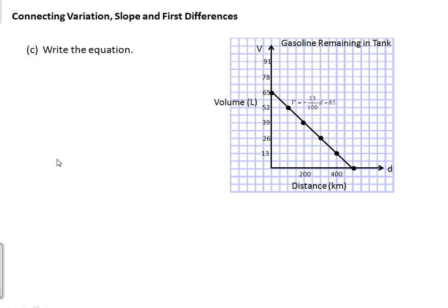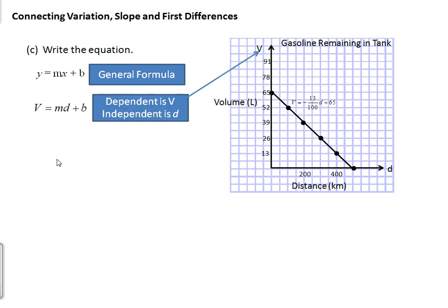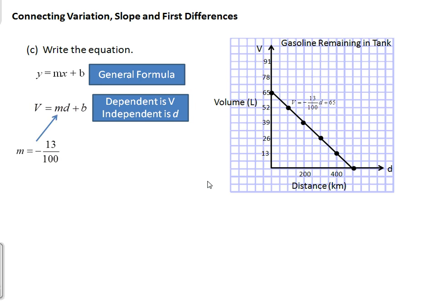Now we're going to take this information and write the equation of the line. We always start with the general formula y equals mx plus b. In this case our dependent variable is V and our independent variable is D, so we substitute those in for y and x. We found in part a that our slope is negative 13 over 100, and in part b that our vertical intercept is 65. Substituting those in for m and b gives us the equation representing the gasoline remaining in the tank.